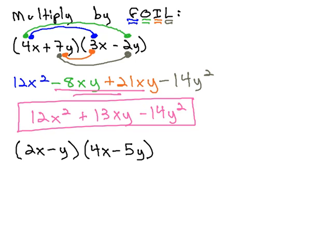Let's look at this pattern worked out in the second example. The second example, I have 2x minus y times 4x minus 5y.